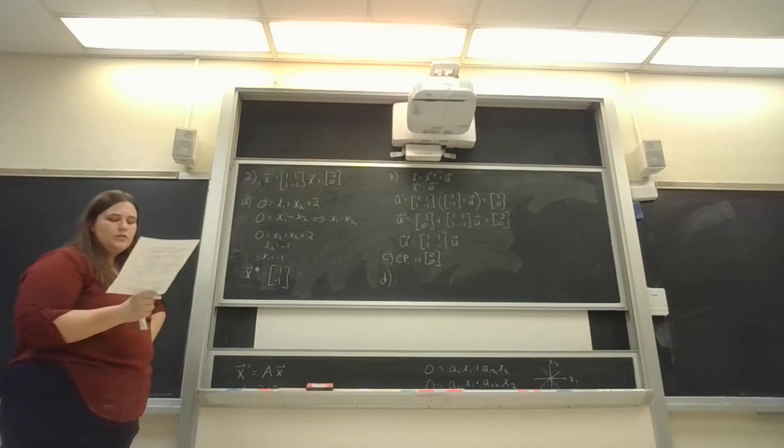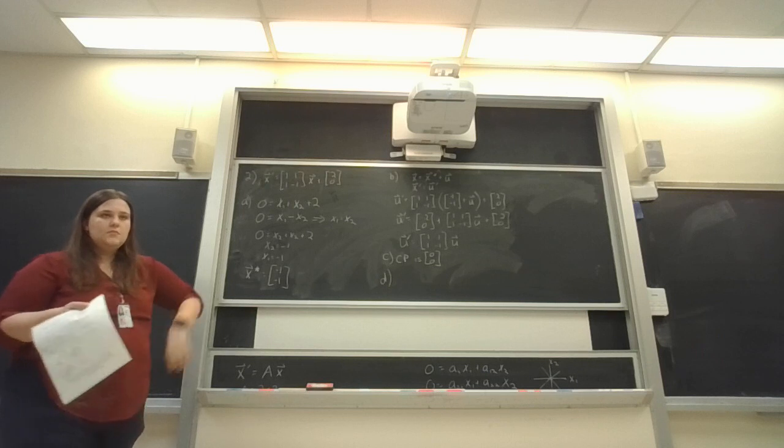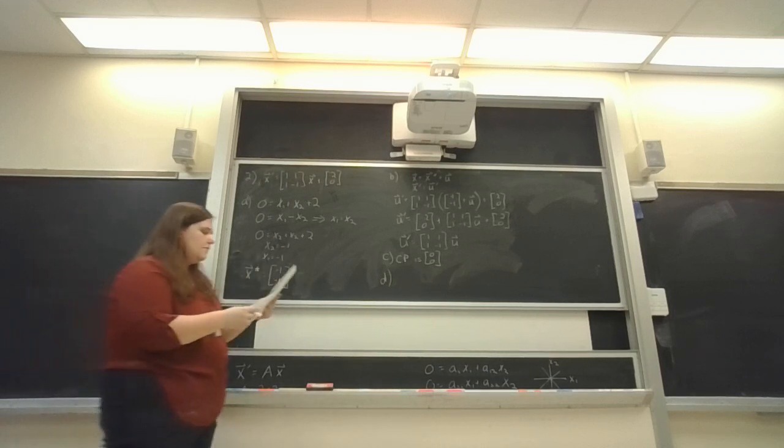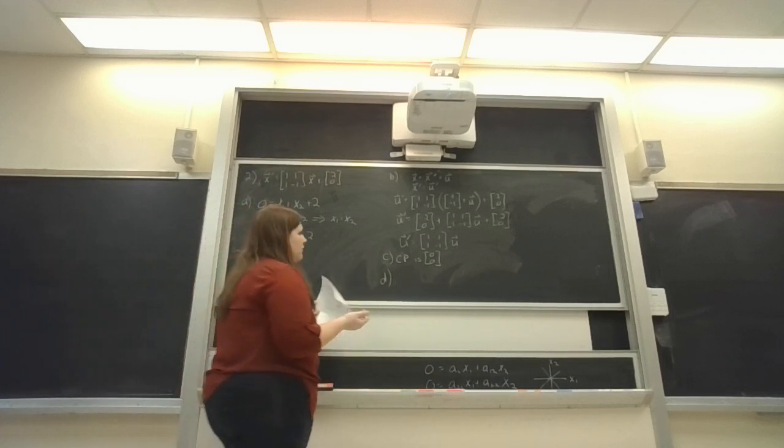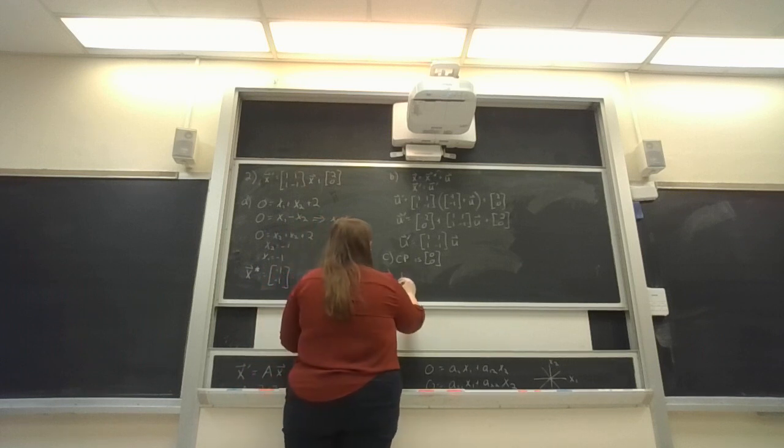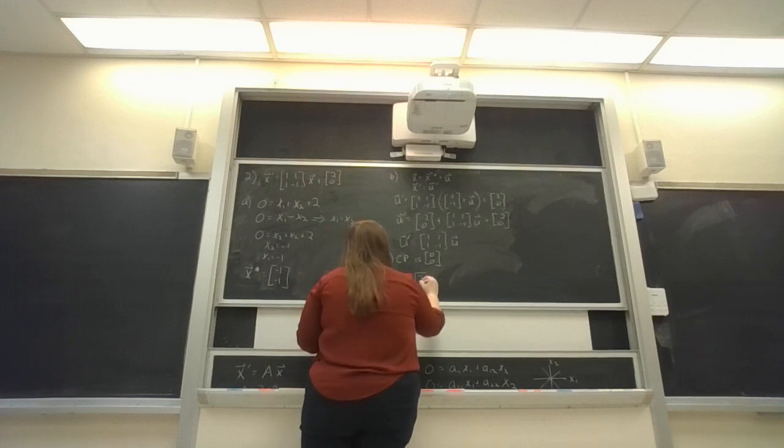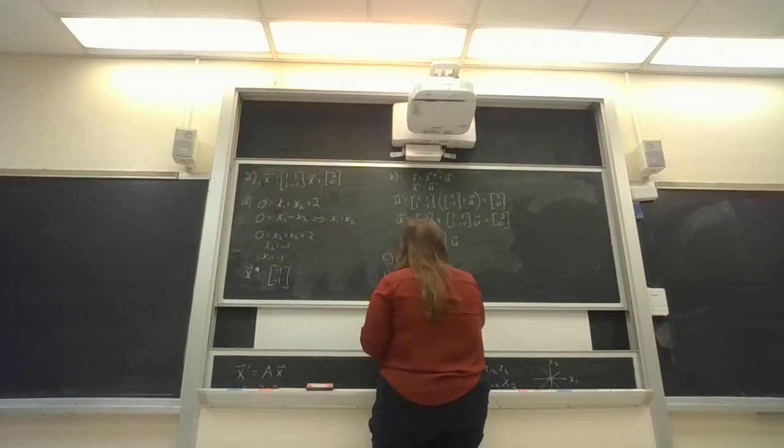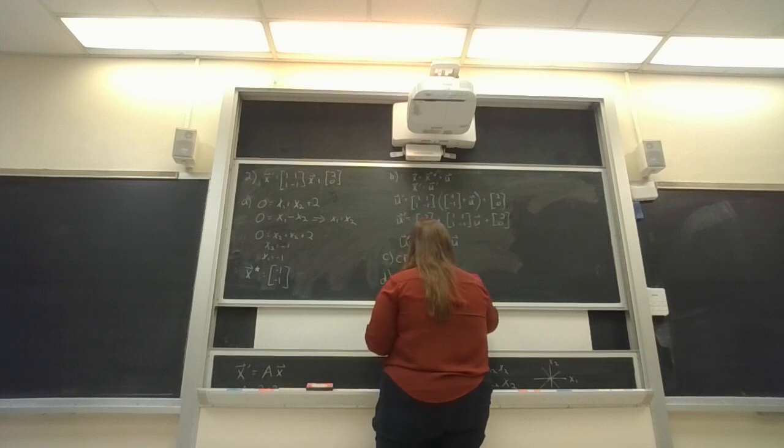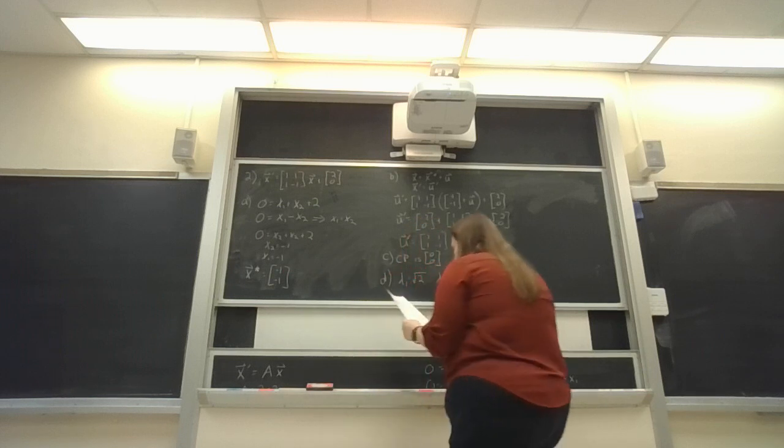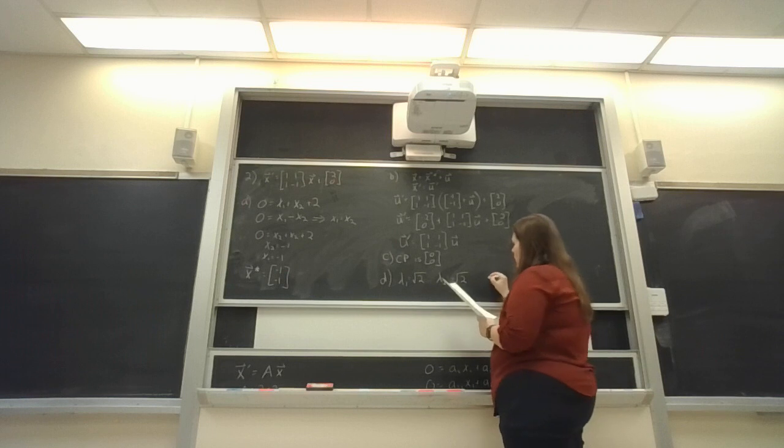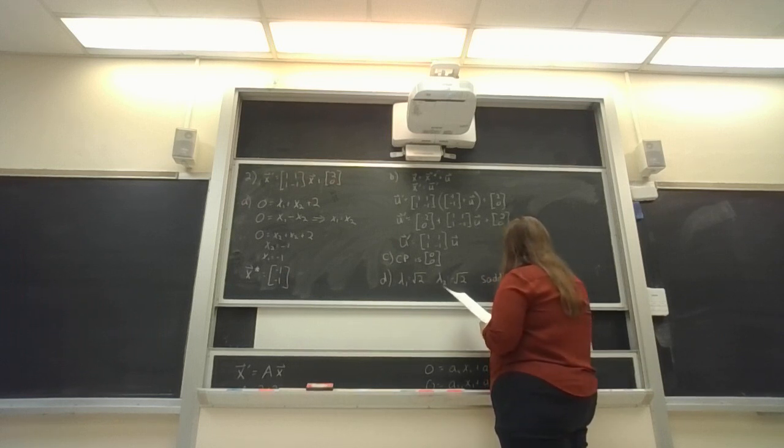And now we want to classify the type and stability of this new system. Like Sarah said, we are going to find our eigenvalues of our matrix. I found my eigenvalues: λ₁ is the square root of two, and λ₂ is the negative square root of two. So this is going to make it a saddle and unstable.